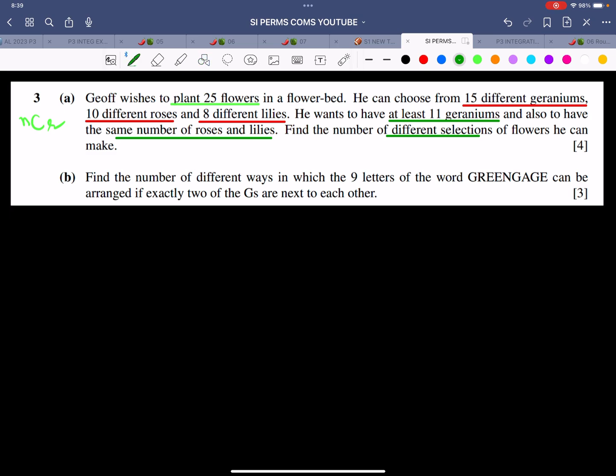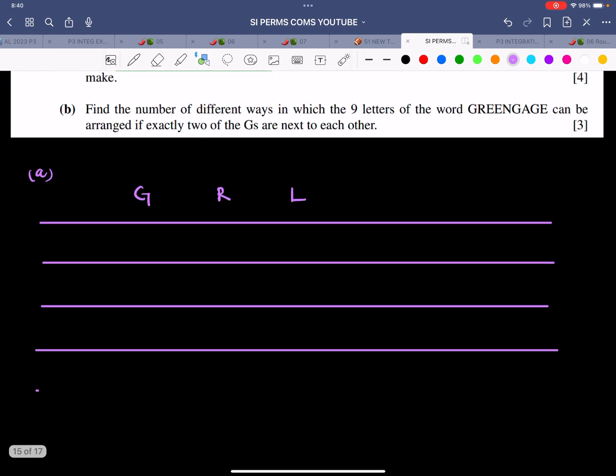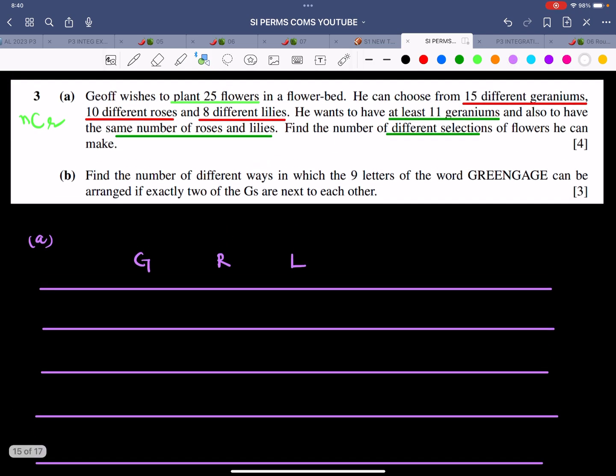I want to plant a total of 25 flowers. We can choose from 15 different geraniums, 10 different roses, and 8 different lilies. The minimum is at least 11 geraniums, and the same number of roses and lilies. We'll write geranium, roses, and lilies. There are 15 geraniums, 10 roses, and 8 lilies. We want minimum 11 geraniums, so let me write 11. The difference between 25 and 11 is 14, divided by 2 is 7 each.